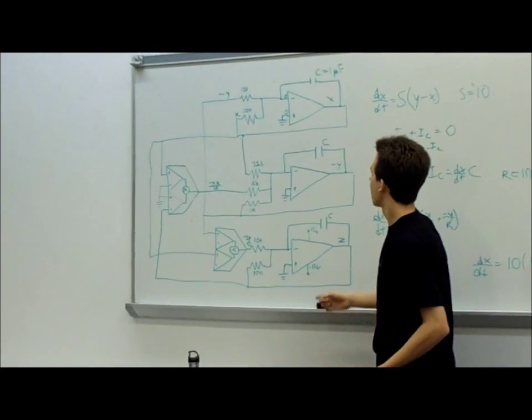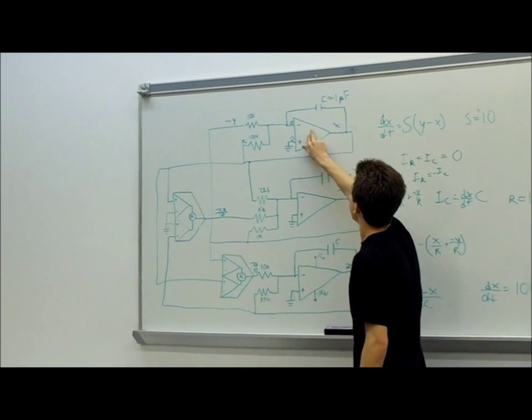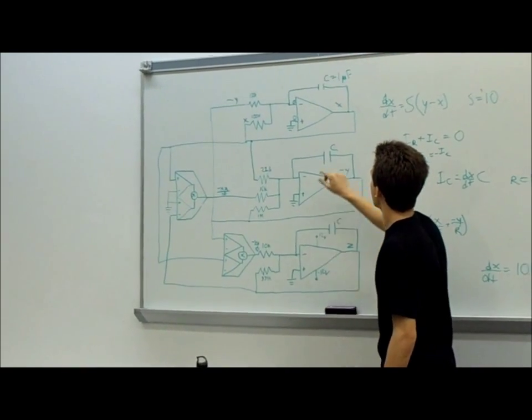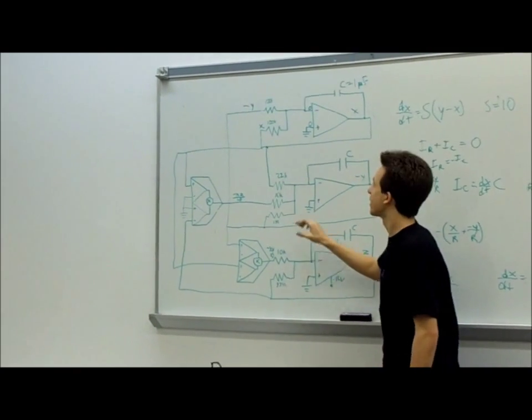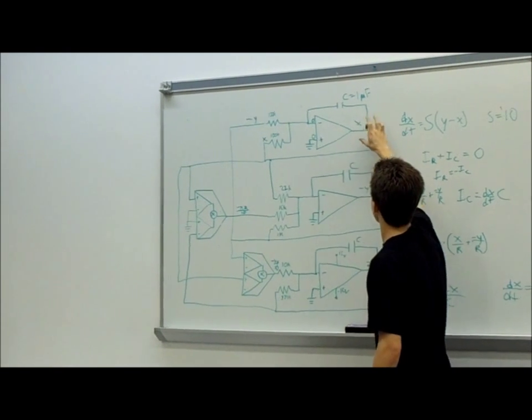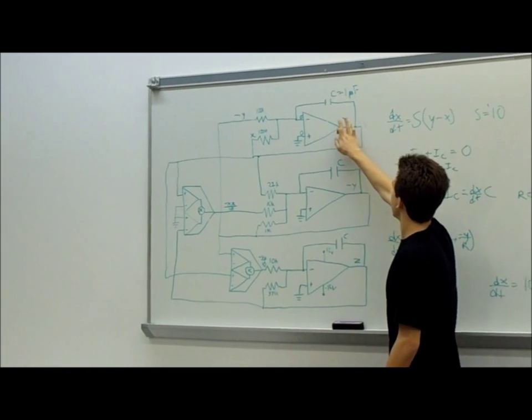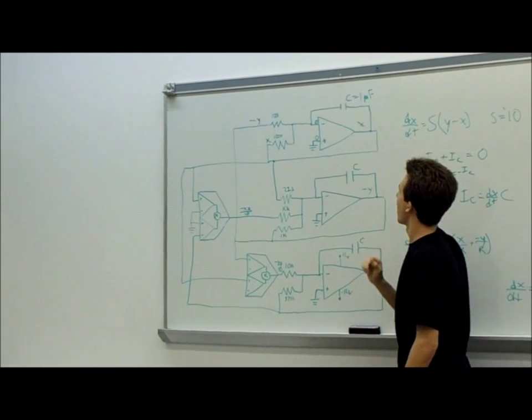To see why the op amps can do both the addition and integration, let's take the case study of the x op amp. So we know that the current flowing through this capacitor has to equal the current flowing through these two resistors. The current through this capacitor is equal to the change in voltage over time multiplied by this capacitance.